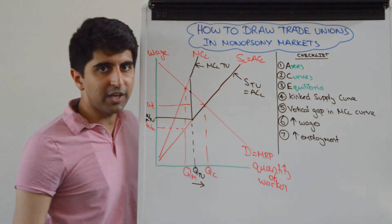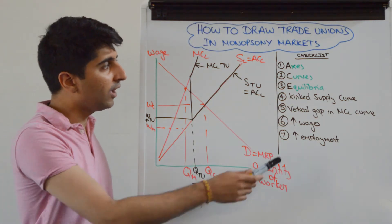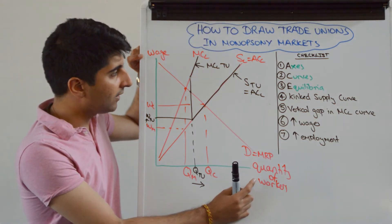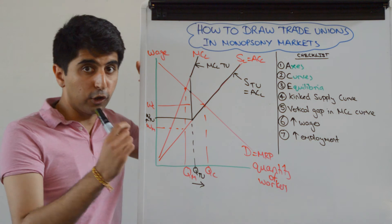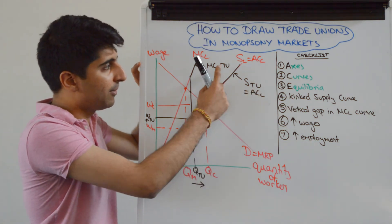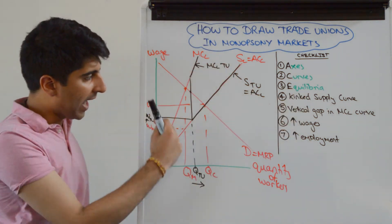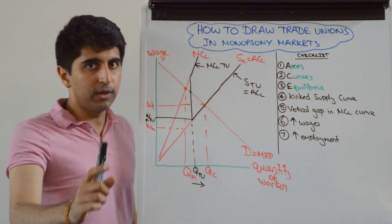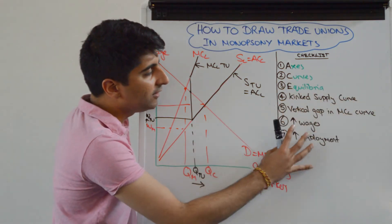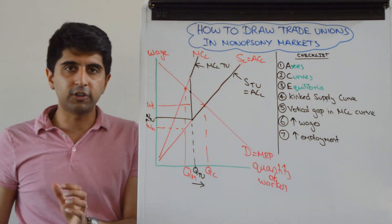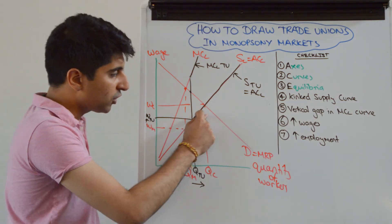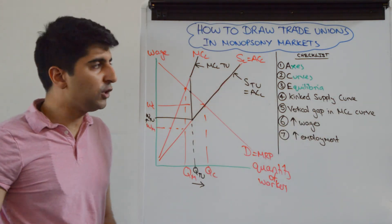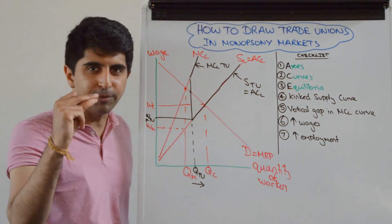Now go through the checklist. Check whether you've aced the diagram: have you labelled your axes and all your curves? There's a lot going on, especially with the labelling. Have you labelled all your equilibria? Also check: have you shown the kinked supply curve? Have you shown the vertical gap in the new marginal cost curve? Both should be present and clearly labelled.